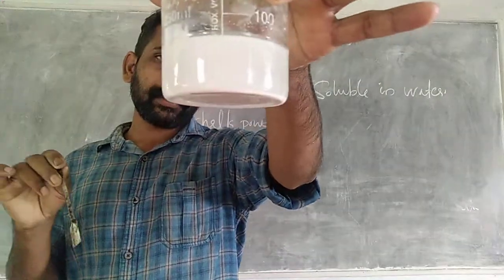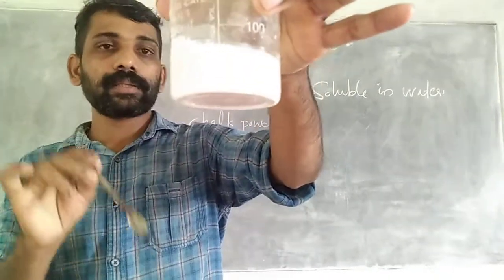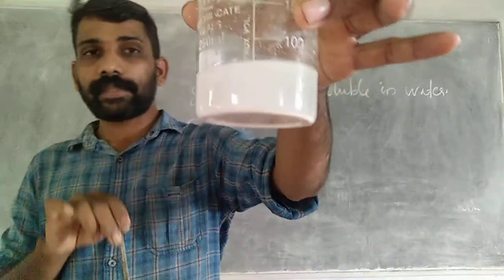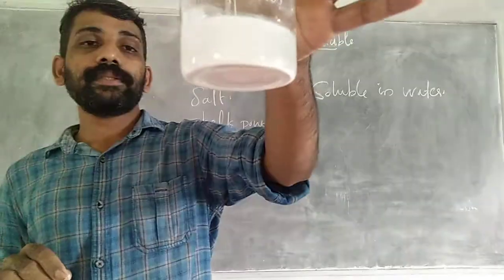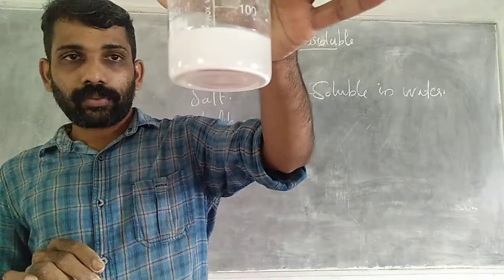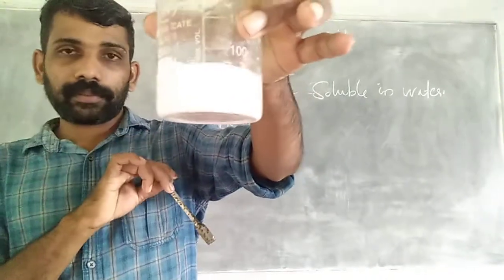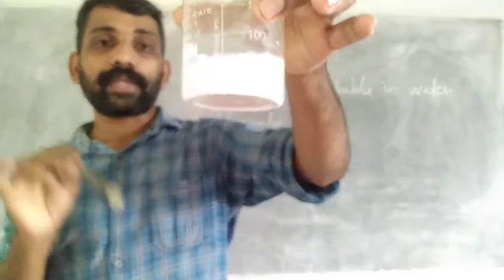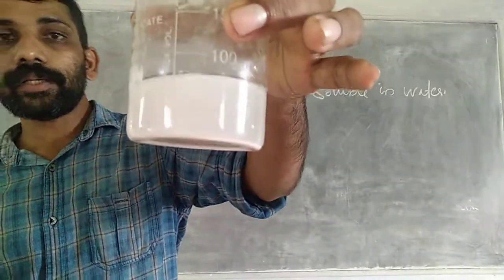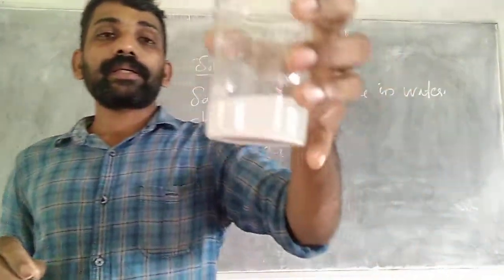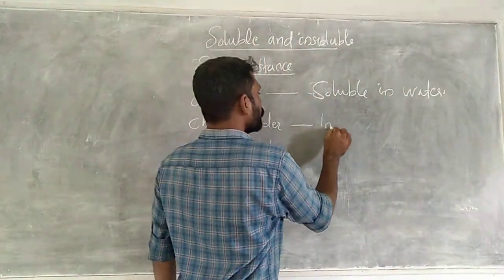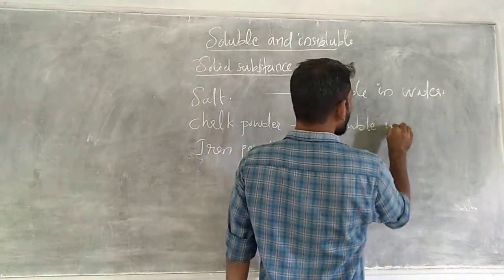After stirring, we keep the beaker undisturbed for some time. After some time, we can see that all the chalk powder has settled down. The chalk powder did not disappear. So we can say that chalk powder is insoluble in water.